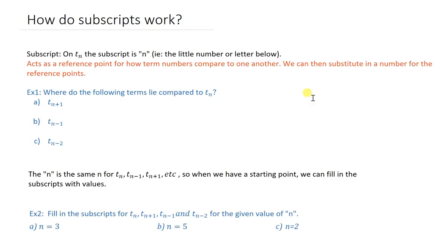First of all, what is a subscript before we get into how they work? It's this little guy here. So on T sub n, this subscript is n, also known as the little letter or number below. Sub meaning below. It's often written fairly small so it's really clear that you're not writing, for example, T times n. So always make it nice and tiny underneath.